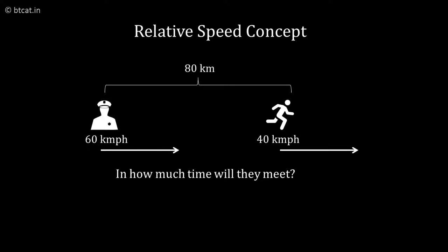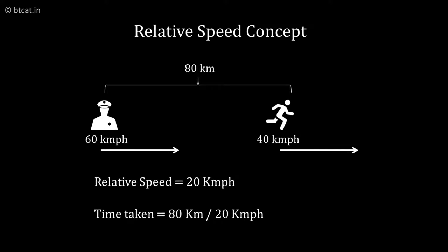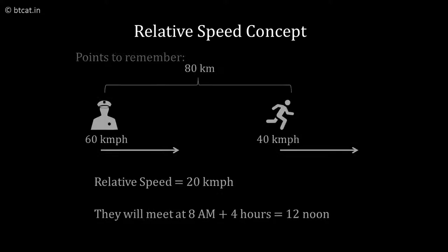In how much time will the police cover this? The net relative speed of the police is 60 minus 40, which is 20 km per hour. Therefore, to cover 80 km, the police will take exactly 4 hours, and the clock time is 12 noon because the police started at 8 AM.